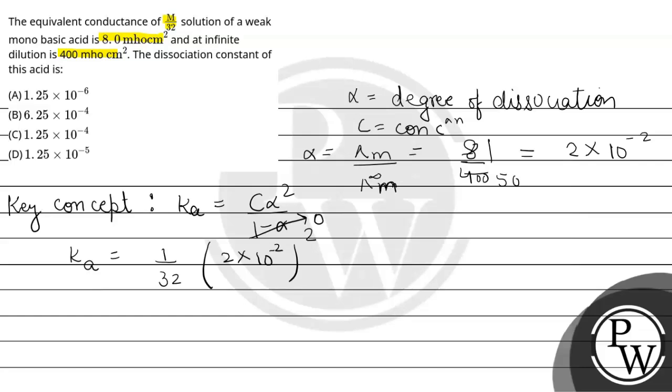The denominator will be approximately 1 only. So it's 1/32 times (2 × 10^-2) squared. After solving, we get Ka, the dissociation constant, as 1.25 × 10^-5.